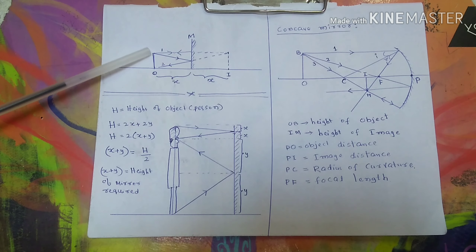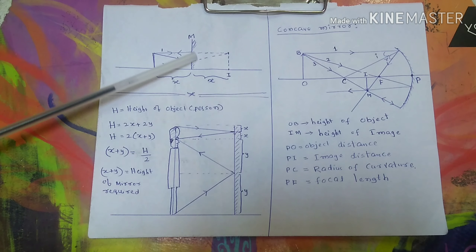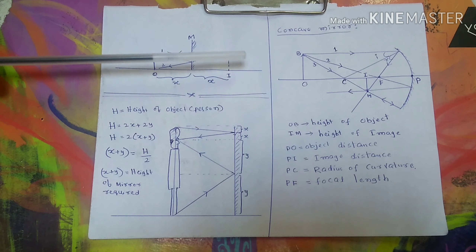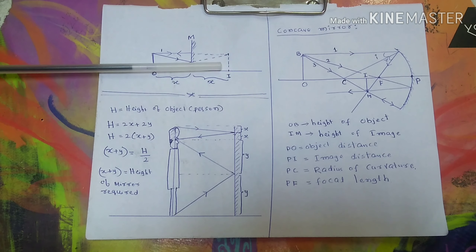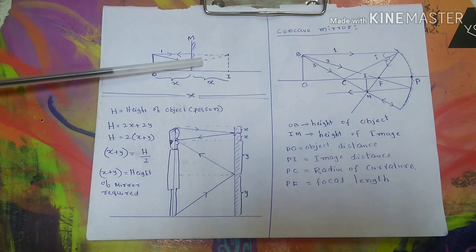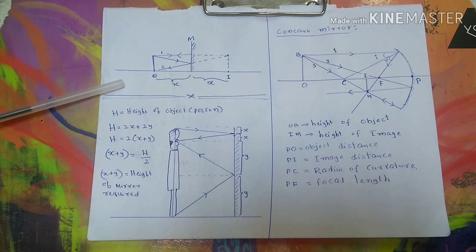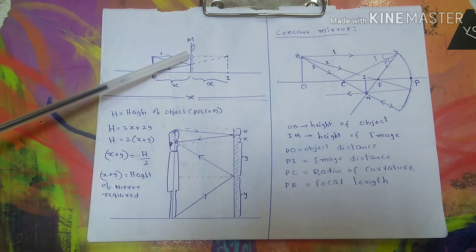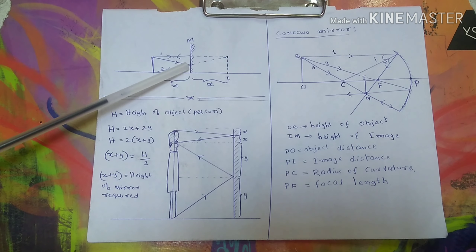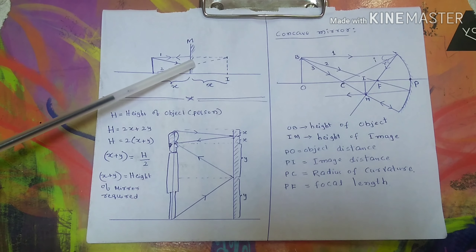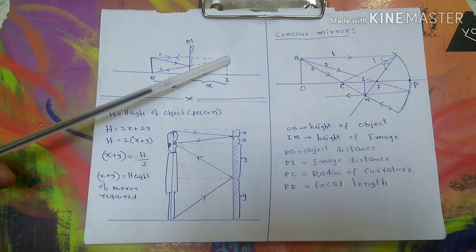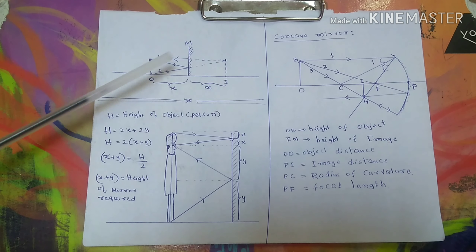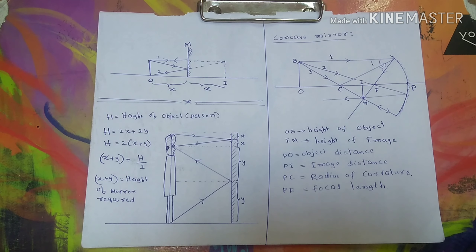Take one more ray from the topmost portion going and falling on the plane mirror at some angle of incidence. This is the normal to the mirror, so this ray makes an angle of incidence with the normal and reflects with the same angle of reflection, since angle of incidence equals angle of reflection. After reflection, extending both rays back behind the mirror, they meet at a point — that point is the image. The image forms like this.